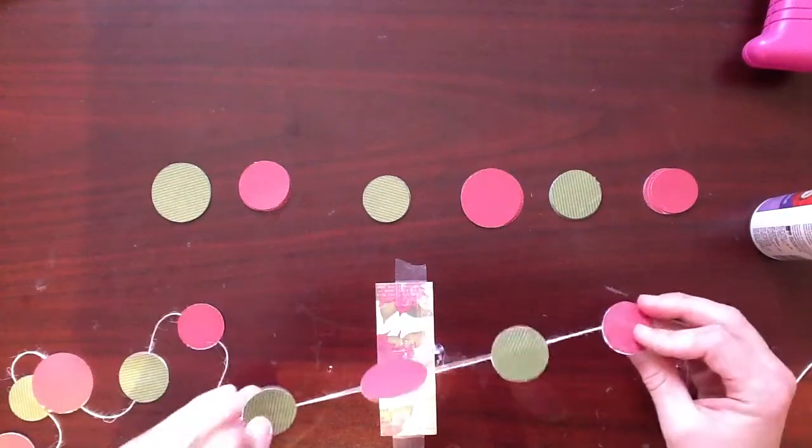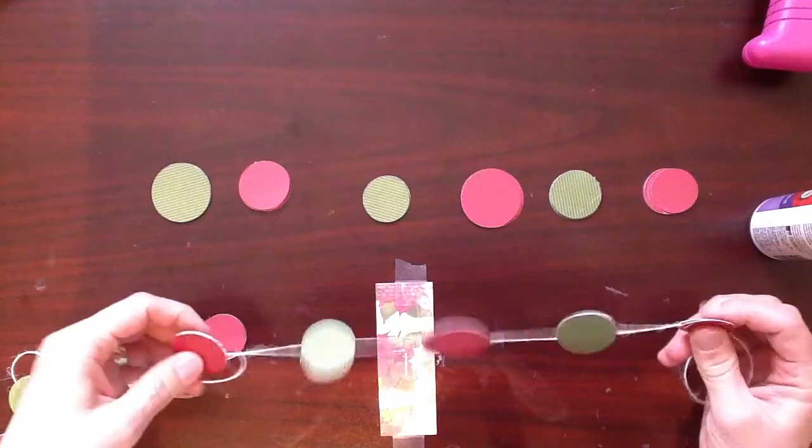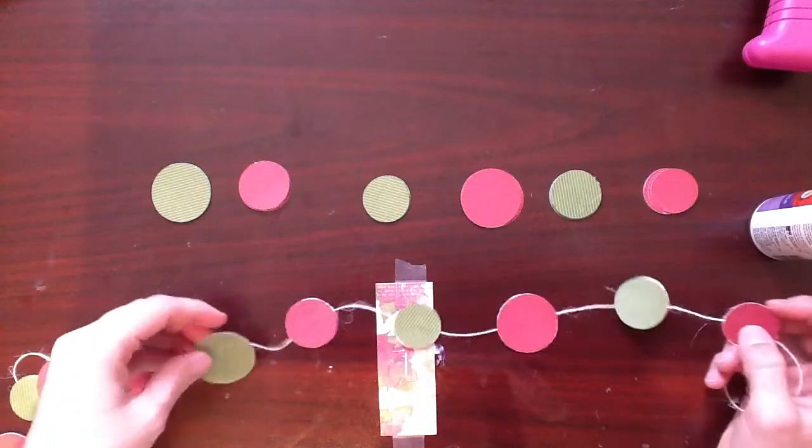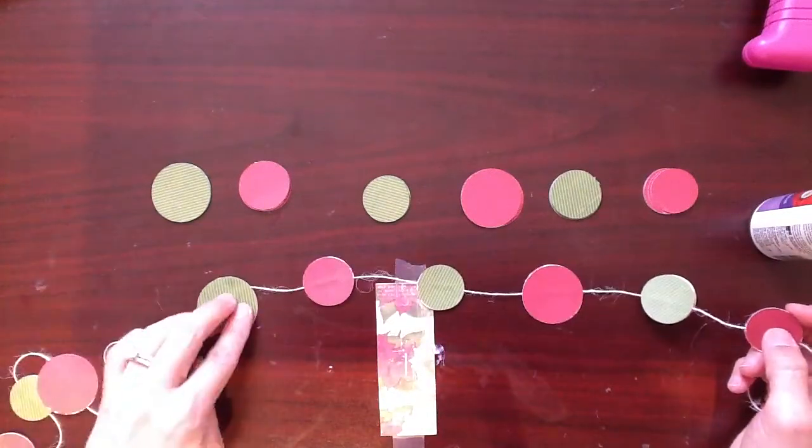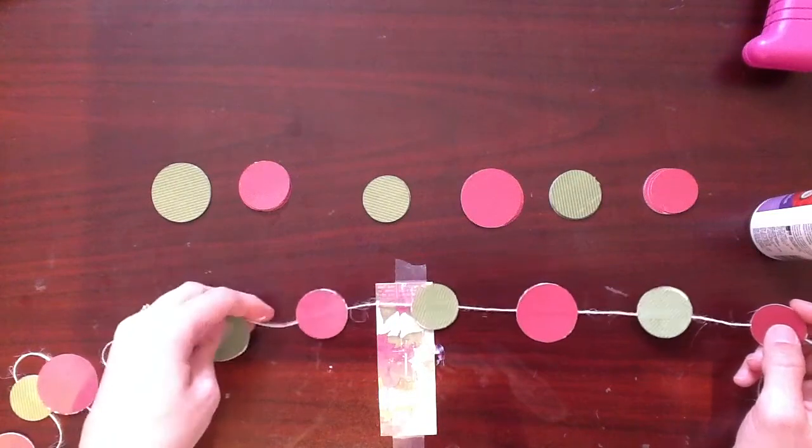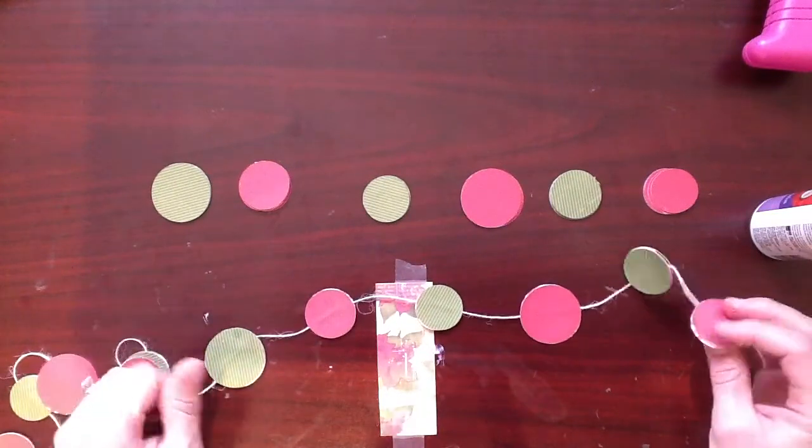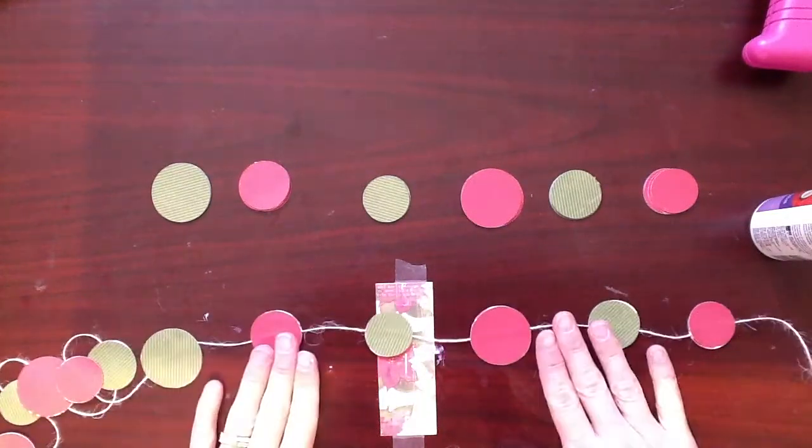And you can see they're going to be the same color on both sides. So it doesn't matter how your garland hangs. It's going to be the same color on both sides. So it can be all flippy and it doesn't matter. All right, I'll show you when we're all done.